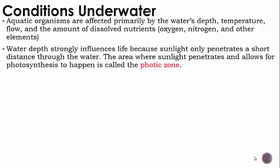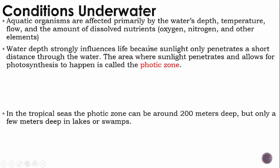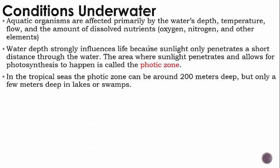Water depth strongly influences life because sunlight only penetrates a short distance through the water. The area where sunlight penetrates and allows for photosynthesis to happen is called the photic zone — photic referring to light. In tropical seas, the photic zone can be around 200 meters deep, but only a few meters deep in lakes or swamps.